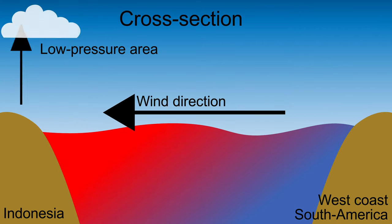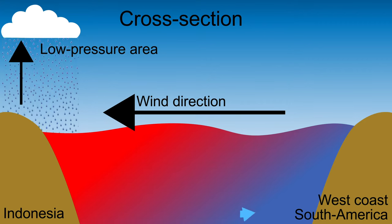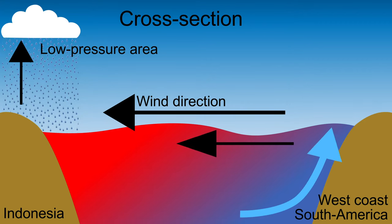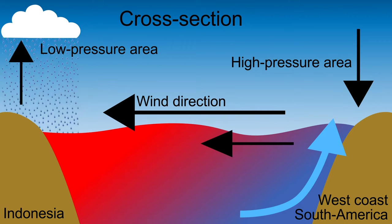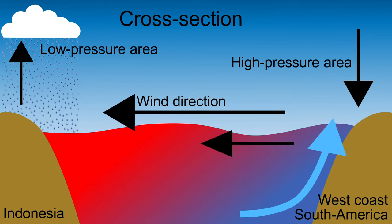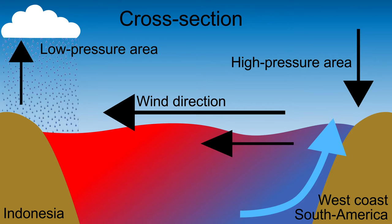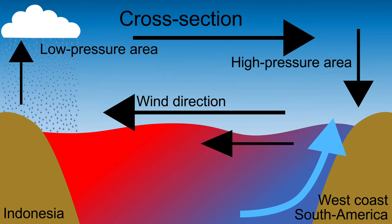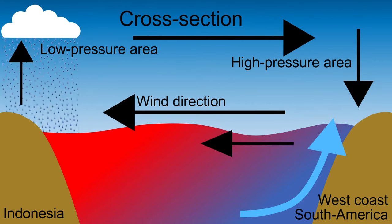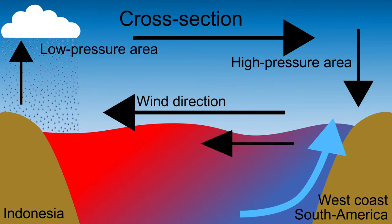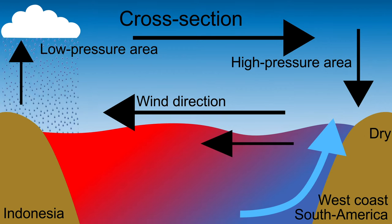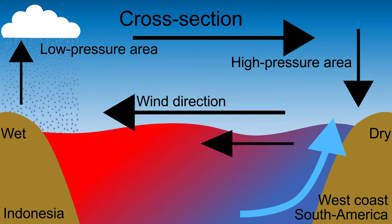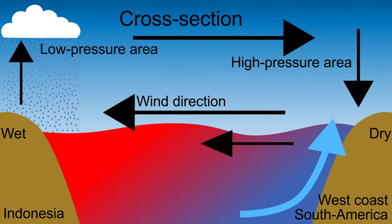On the west coast of South America the seawater on the surface moves to the west, promoting upwelling of cold water. This cold seawater creates cold descending air and a high pressure area. Moreover, this water does not evaporate quickly, creating deserts on the west coast of South America. In short, in the normal weather pattern the west coast of South America is dry due to the cold seawater, and the eastern area of Indonesia is very wet due to the warm seawater.